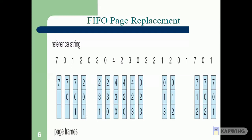For reference 4: 4 is not in the frame, page fault occurs — count is 7. Using FIFO, 2 was first in among current entries, so we replace 2 with 4. For reference 2: 2 is not in the frame, page fault occurs. We replace the next first-in entry, which is 3, with 2 — count is 8.